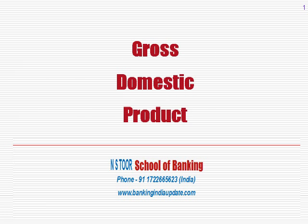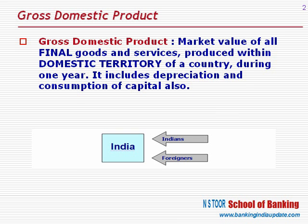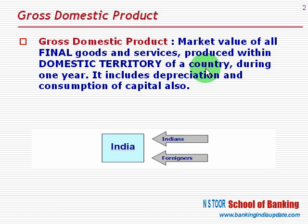Gross Domestic Product. What is GDP? Gross Domestic Product, or GDP, is the market value of all final goods and services produced within the domestic territory of a country during a period of one year.